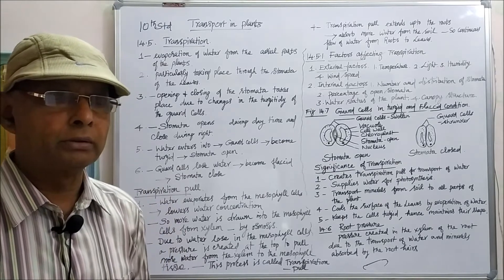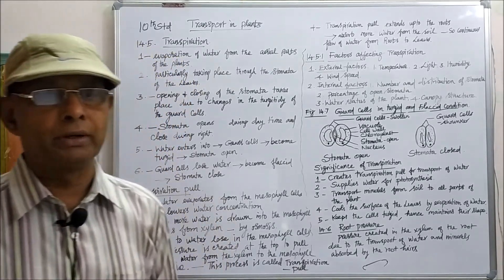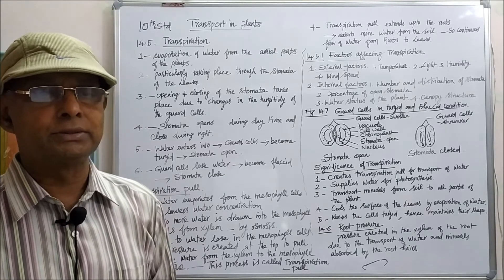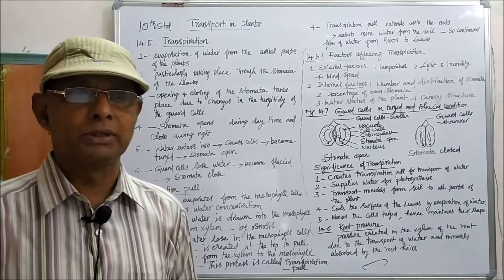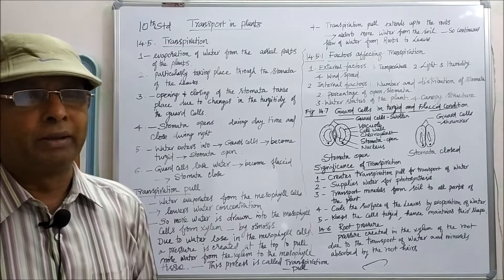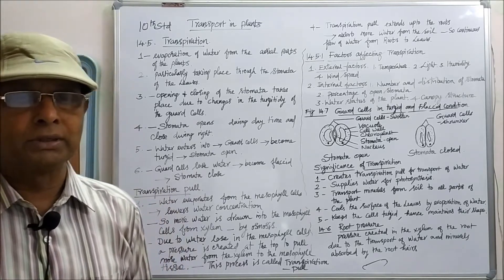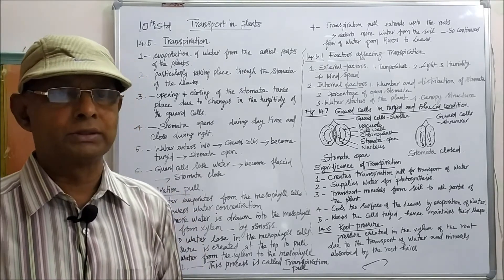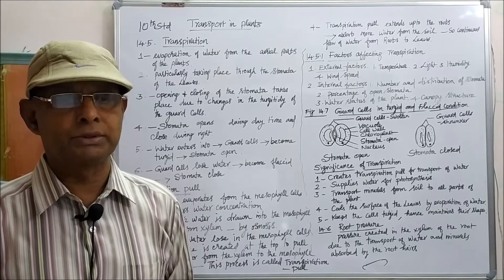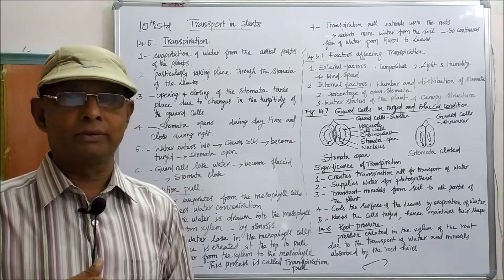Stomata are open in the daytime and closed at night. Opening and closing of the stomata is due to the changes in the turgidity of the guard cells. When water enters into the guard cells, they become turgid and the stomata will open. When the guard cells lose water, they become flaccid and the stomata will be closed.